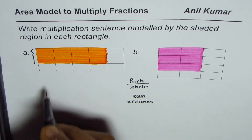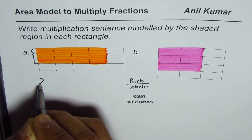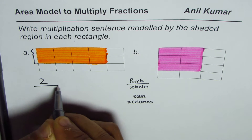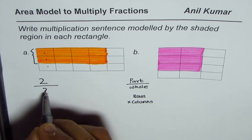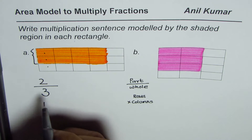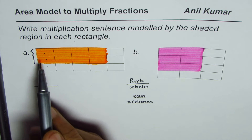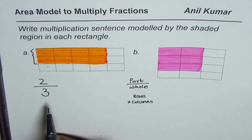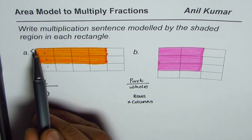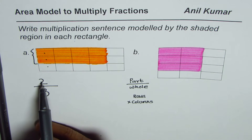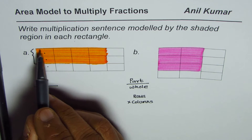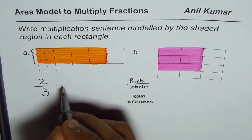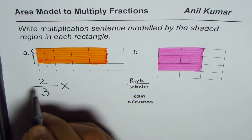Looking at the rectangle, there are two rows shaded out of a total of three. So the width of the shaded portion is two out of three — two out of three rows are shaded.